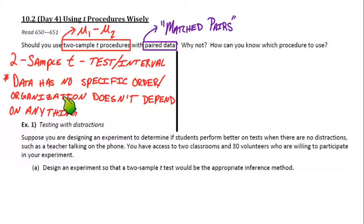the data doesn't have any respect to each other, no organization or specific order. So the two groups, the way they're organized, would be completely independent.